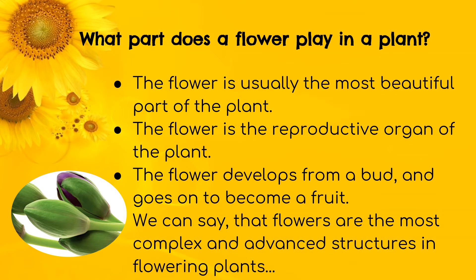So what part does a flower play in a plant? The flower is the reproductive organ of the plant, and it is also usually the most beautiful part of the plant. The flower develops from a bud and goes on to become a fruit. We can say that flowers are the most complex and advanced structures in flowering plants.